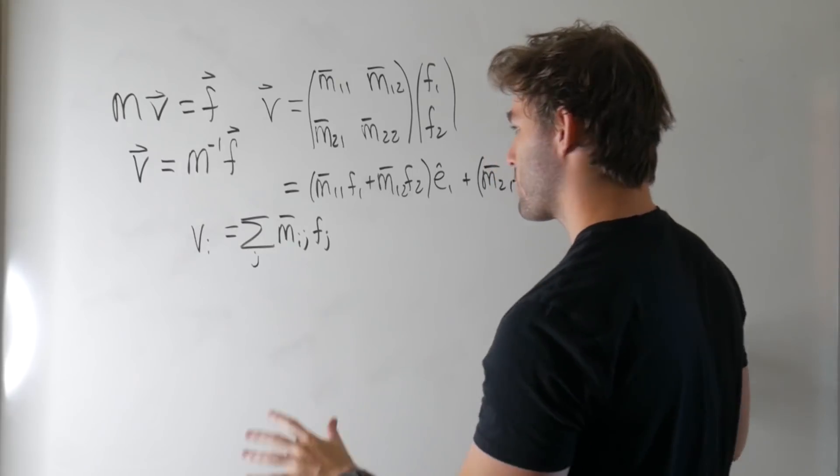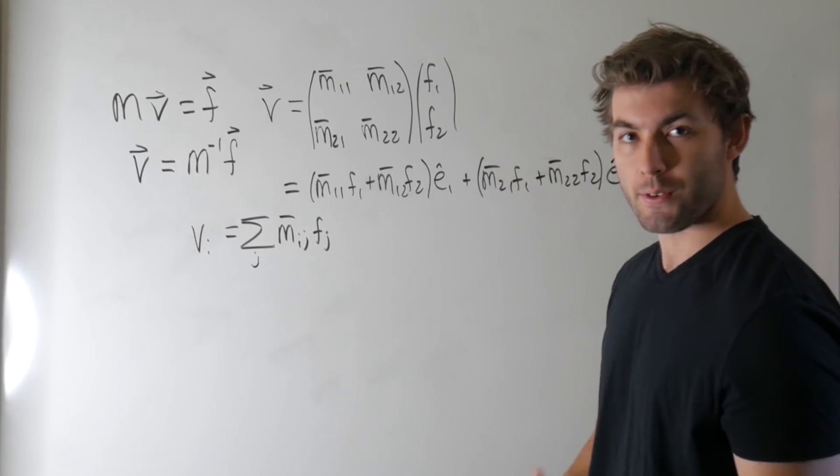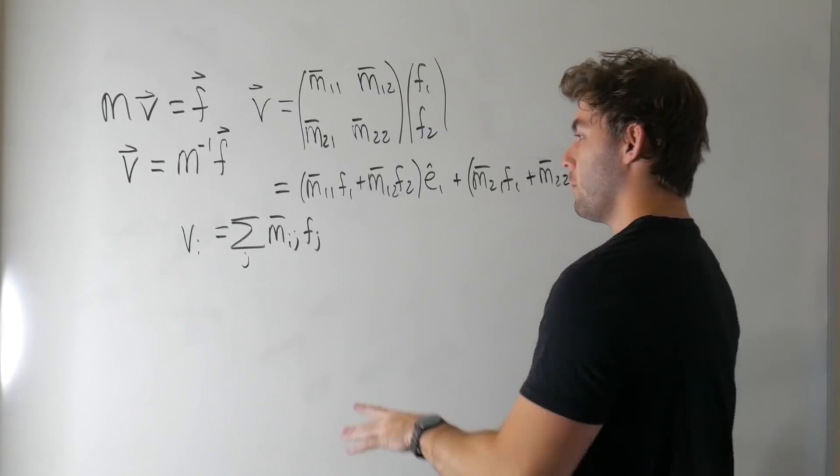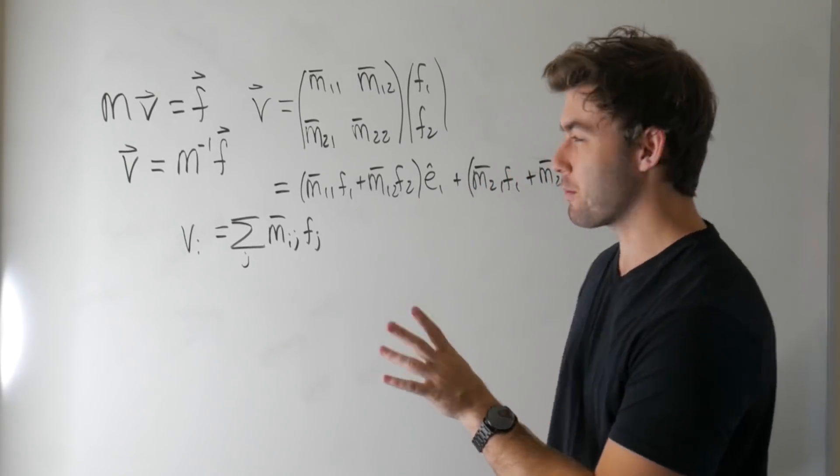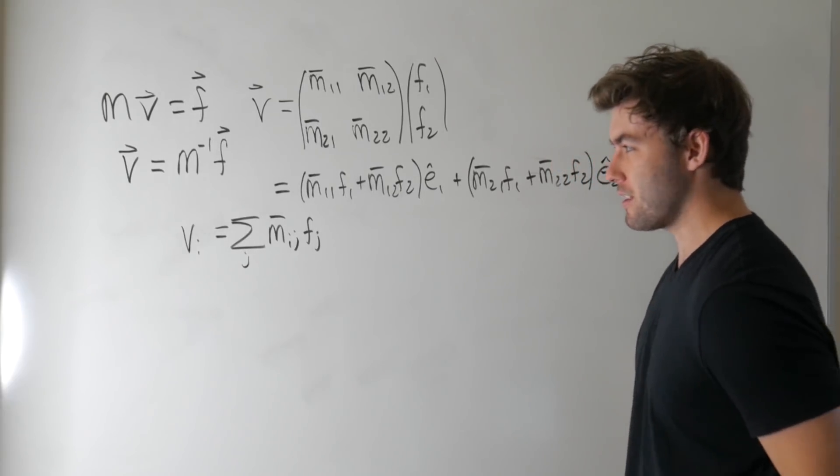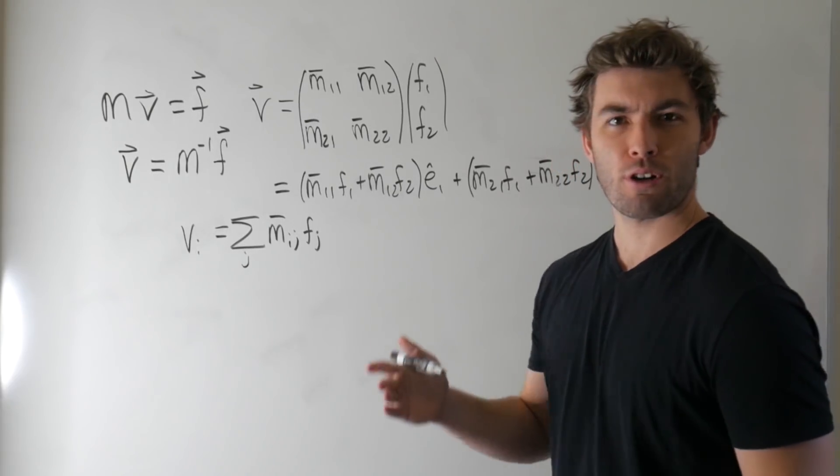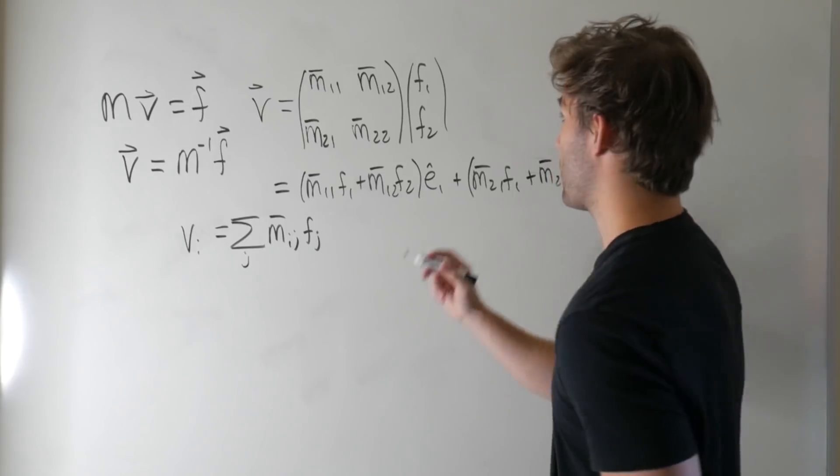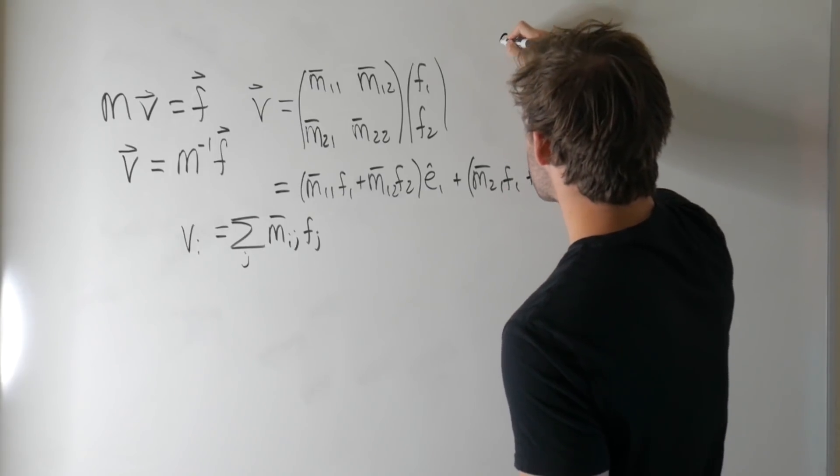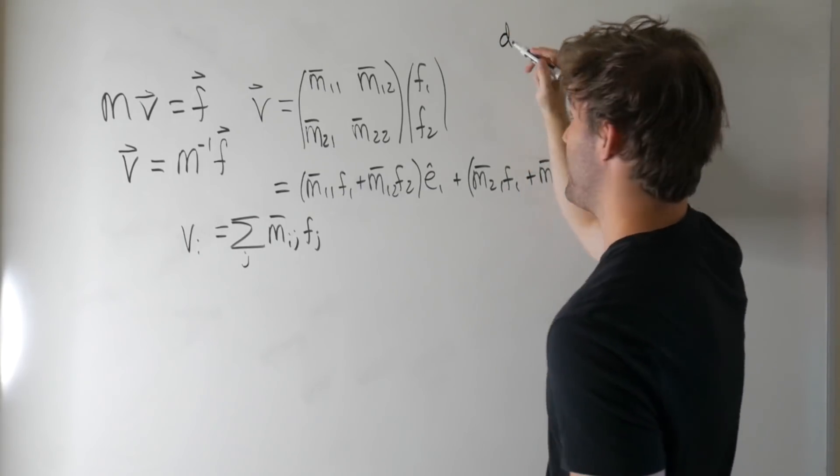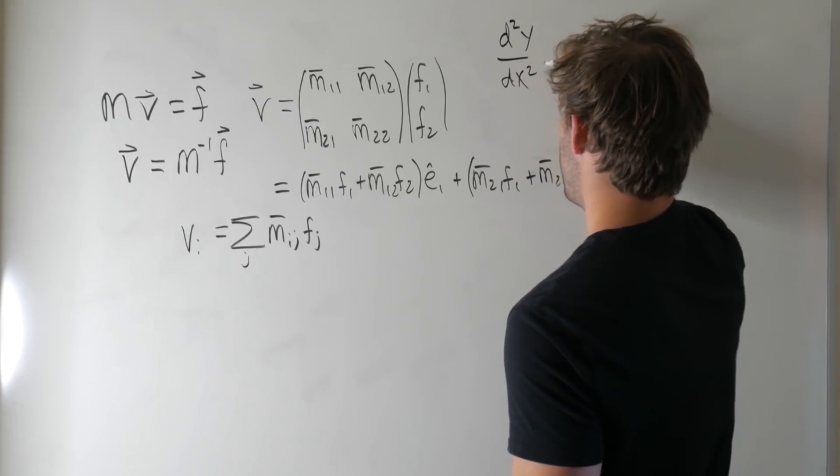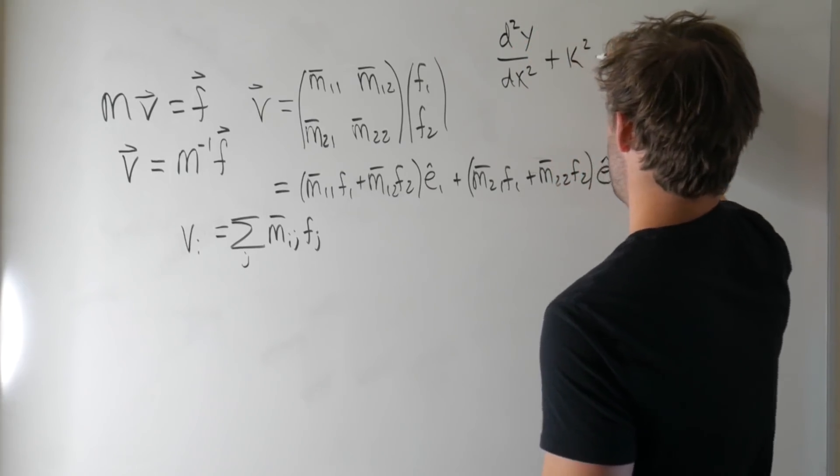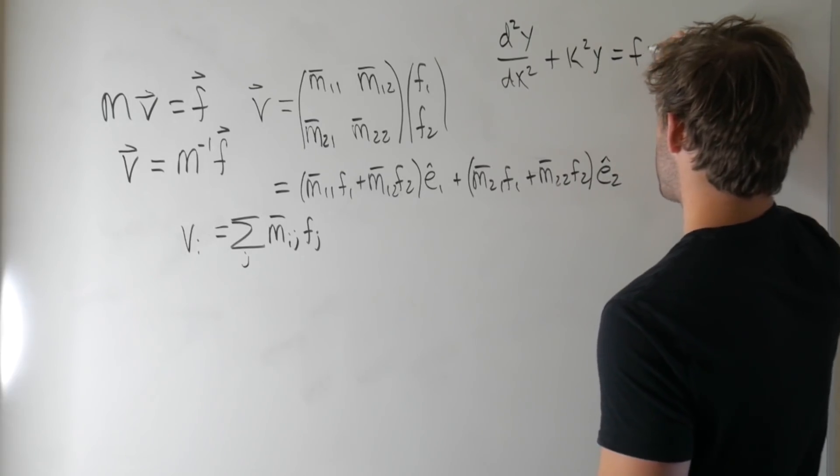This might seem really abstract, and what does this have to do with Green's functions, but I'm about to get to it. Now I want to change gears and talk about something that's seemingly unrelated to this, but I promise it's not, and we're going to talk about differential equations. So if we construct some arbitrary second-order linear differential equation that looks maybe something like this, it doesn't have to look like this, it does have to be linear. D squared Y dx squared plus K squared Y is equal to some function F of X.